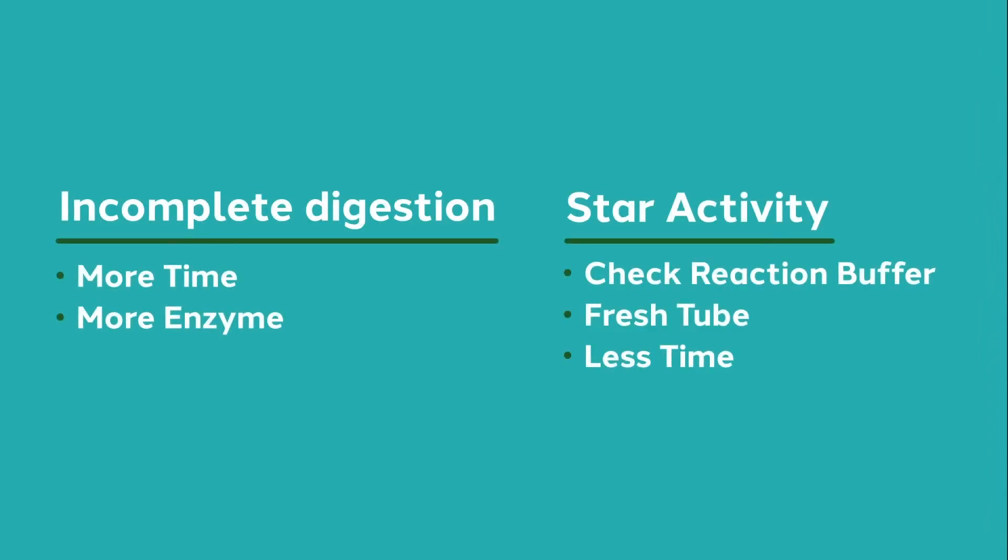To deal with incomplete digestion, allow the digest to run longer or add more enzyme — refer to the manufacturer literature, as this is not always a simple choice. Some enzymes are stable for several hours, so extending incubation time is sufficient. Other enzymes lose activity within a few hours; in that case, adding more fresh enzyme midway through the reaction is needed. To deal with star activity, double check that you are using the correct reaction buffer, that it has fully thawed and been resuspended, that it has been diluted correctly, and pay attention to the timing of your digest.